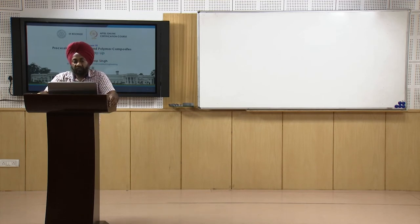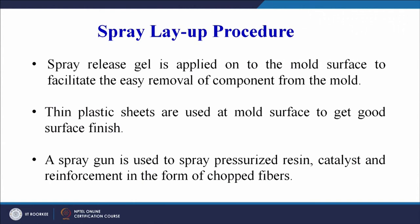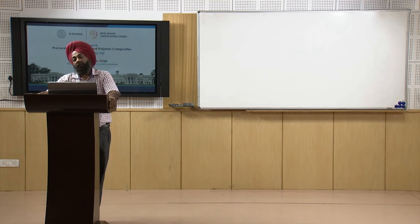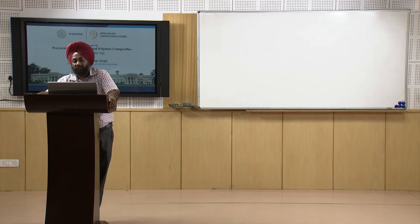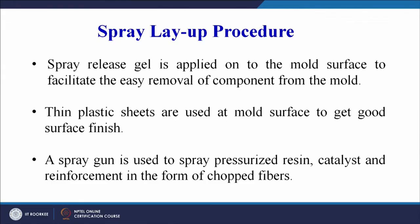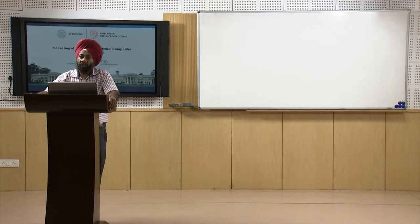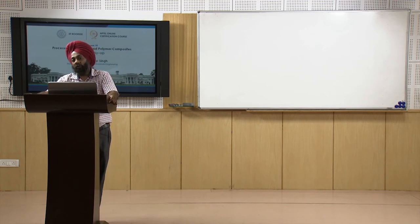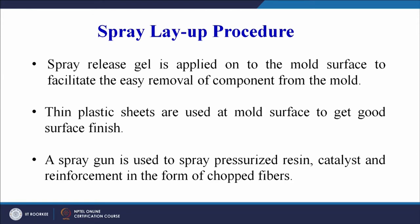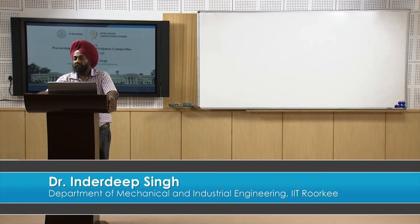The release gel is applied on the mold surface, similar to hand layup, to facilitate easy removal of the component. If we do not spray the release gel, the cured composite may stick to the mold surface. Thin plastic sheets are also used at the mold surface to get good surface finish and avoid sticking. A spray gun — referred to as a chopper gun in the diagram — sprays pressurized resin, catalyst, and reinforcement in the form of chopped fibers.